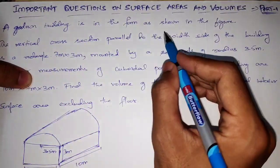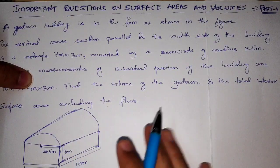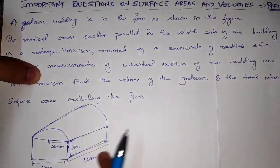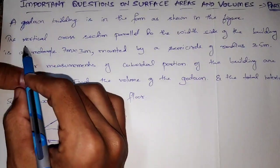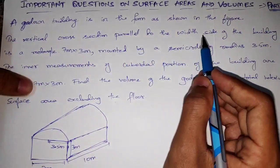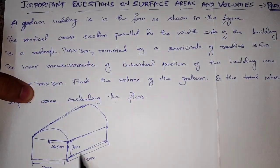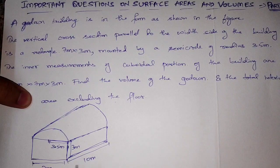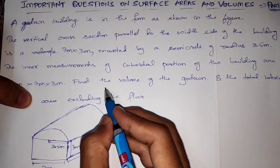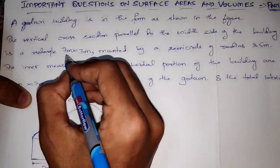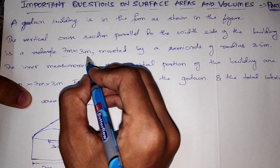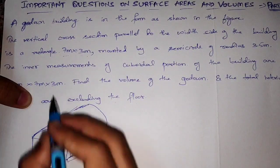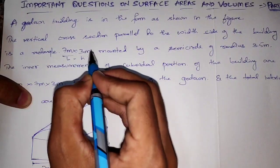A golden building is in the form as shown in the figure. The vertical cross section parallel to the width side of the building is a rectangle. This is parallel to the width side of the building and is a rectangle. This involves breadth and height, length, and a cube-solid cross section.